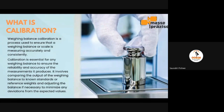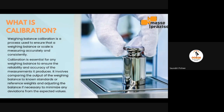Weighing balance calibration is a process used to ensure that the weighing balance or scale is measuring accurately and consistently. When we say accurately and consistently, consistently means we consider the factor of repeatability — the weighing balance must be accurate as well as repeatable, able to produce the same results under different conditions. It involves comparing the output of the weighing balance to known standards or the known true value of the masses or reference weights, and adjusting the balance if necessary.